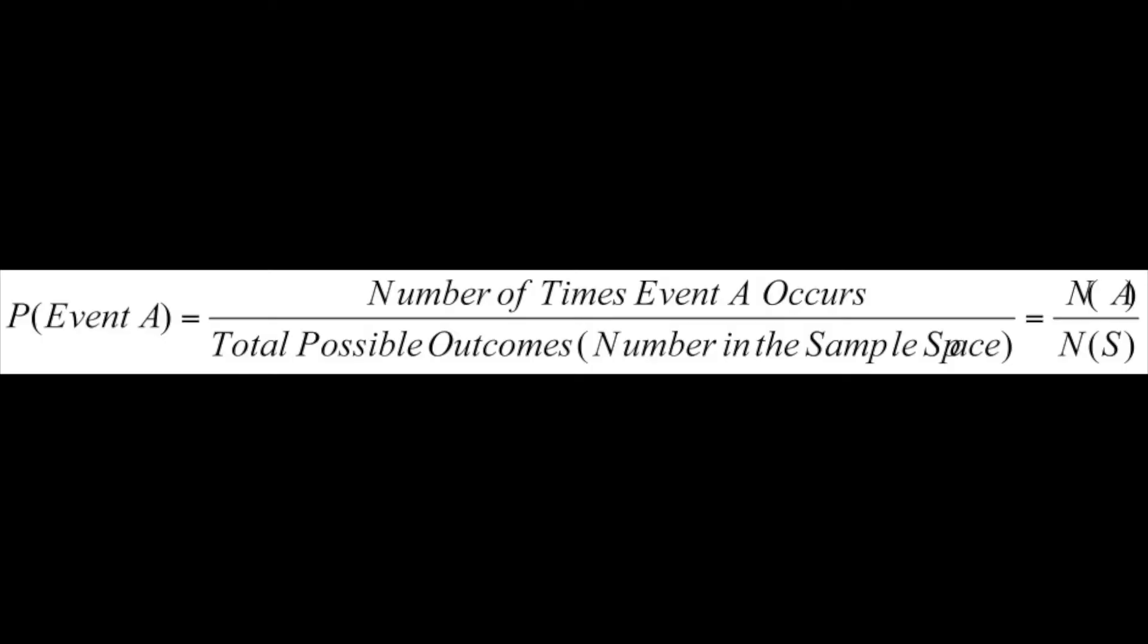The probability of A is the probability that event A occurs, as given in the formula. The probability of event A equals the number of times event A occurs over the total possible outcomes.